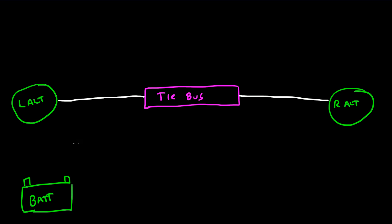The battery feeds a battery bus, which we'll draw right there. There's the battery bus, and the battery feeds that bus, and then that bus feeds the TIE bus as well. So there we go.